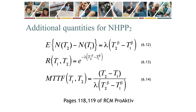From the definition of the NHPP for model Rho2(T), one can also calculate the same three quantities. Equation 6.12 calculates the expected number of failures in any interval T1 to T2; by setting T1 equals zero, the absolute expected number of failures up to T2 can be calculated. Equation 6.13 calculates the probability that the system will survive from T1 to T2; by setting T1 equals zero, the absolute survival probability up to T2 can be calculated. Equation 6.14 calculates the mean time to failure in the interval T1 to T2; by setting T1 equals zero, the absolute MTTF up to T2 can be calculated.